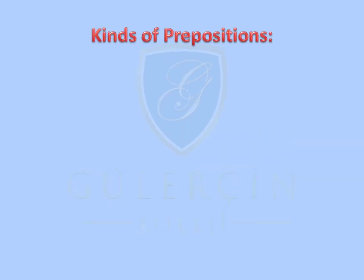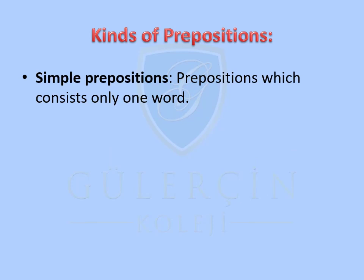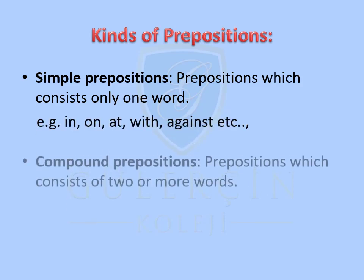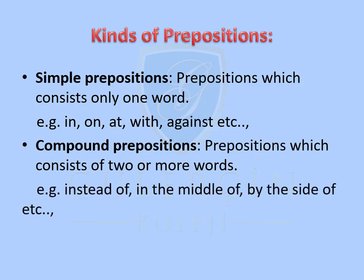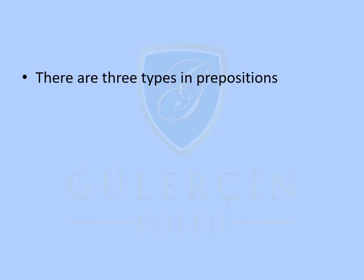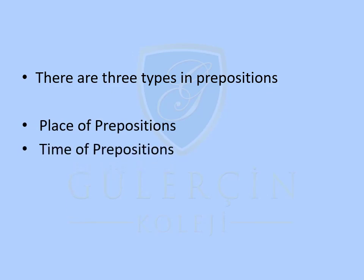Kinds of Propositions: Simple propositions are propositions which consist of only one word. Compound propositions are propositions which consist of two or more words. There are three types of propositions: propositions of place, propositions of time, and propositions of direction.